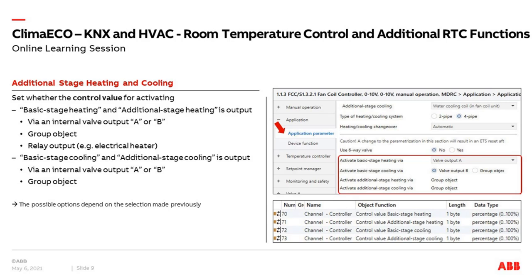Assigning these stages to the hardware: in our fan coil controller you can activate basic stage heating via valve output A and basic stage cooling via valve output B. For the additional stage heating or cooling, if you need both, there are no additional hardware outputs in this device, so you have to send it via a group object to an additional valve controller to control in total four different circuits. You can also route basic stage heating or cooling this way — you are completely flexible, but in principle you need at least two additional outputs if you have four circuits.